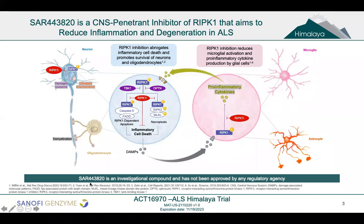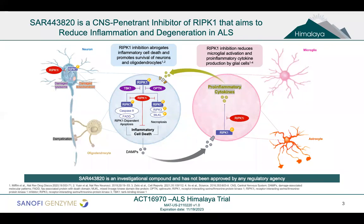This is how we believe SAR 443820, a CNS-penetrant RIP-K1 inhibitor, works. It's an investigational compound and has not been approved by any regulatory agency — it's still in development. We have completed the first-in-human study of this compound, both single ascending dose and multiple ascending dose. The compound looks safe and has good PK qualities. We were able to inhibit RIP-K1 in the periphery in a very promising way, and it shows almost a one-to-one ratio of unbound plasma to CSF. It's an oral small molecule.